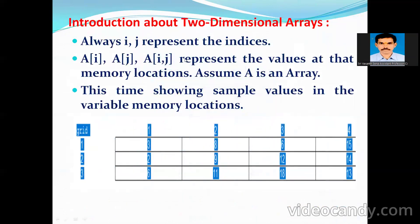Introduction about two-dimensional arrays: i and j will represent the indexes. A[i] and A[j] represent a one-dimensional array, while A[i,j] will represent a two-dimensional array in Raptor. A[i] and A[j] refer to values at particular memory locations.